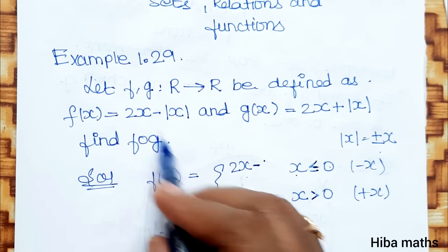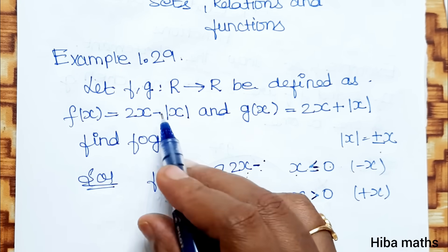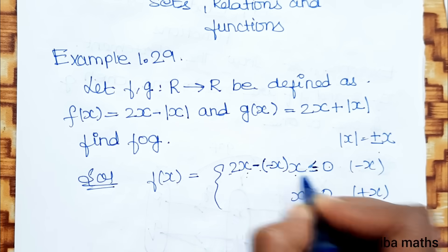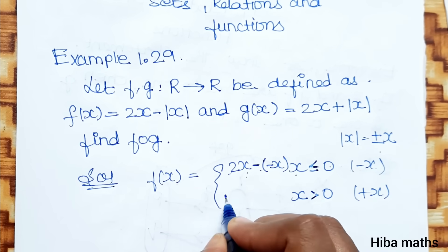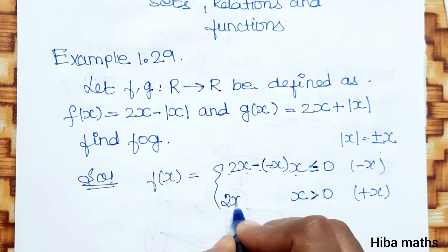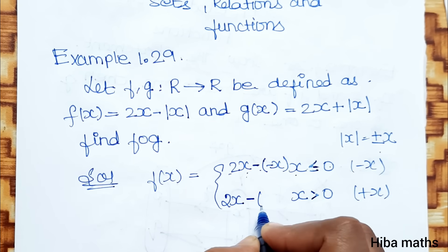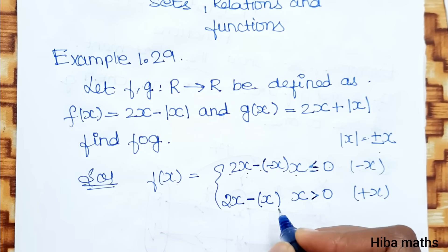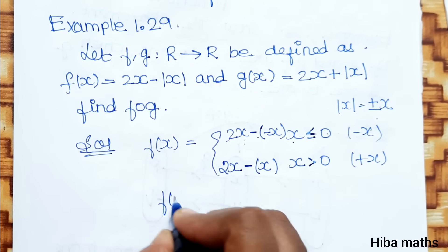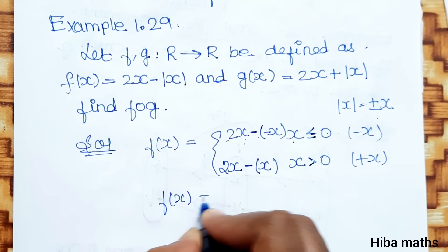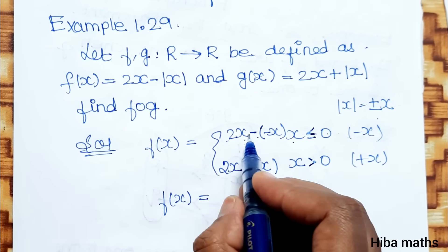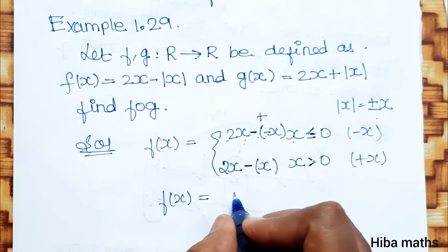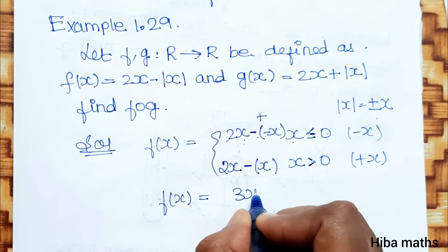Now, f of x equals 2x minus modulus of x, which gives minus x at one end. At the other end, 2x minus modulus of x gives plus x. Now solving: the answer involves minus, minus, minus, plus. At the end, 2x plus x is equal to 3x.